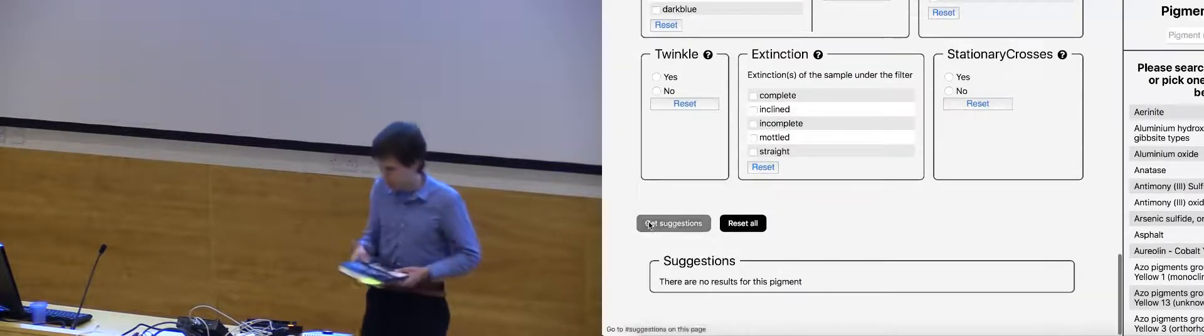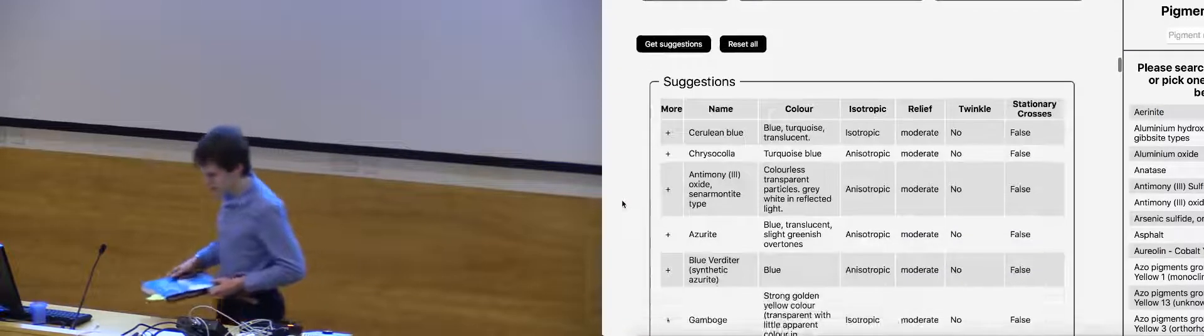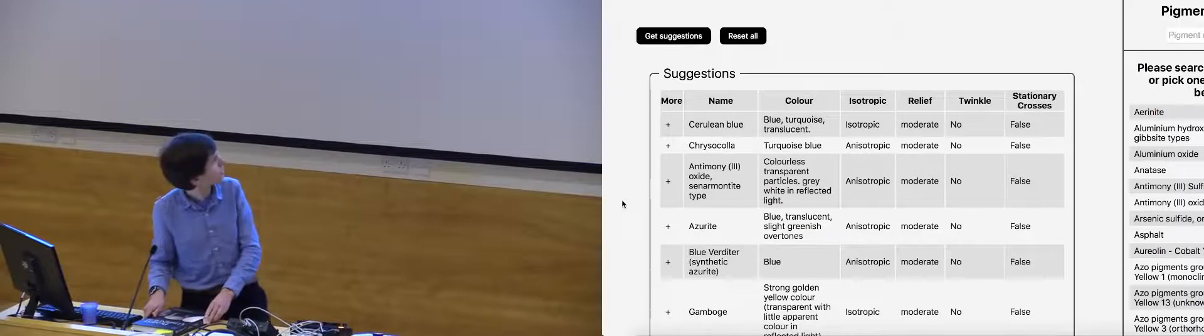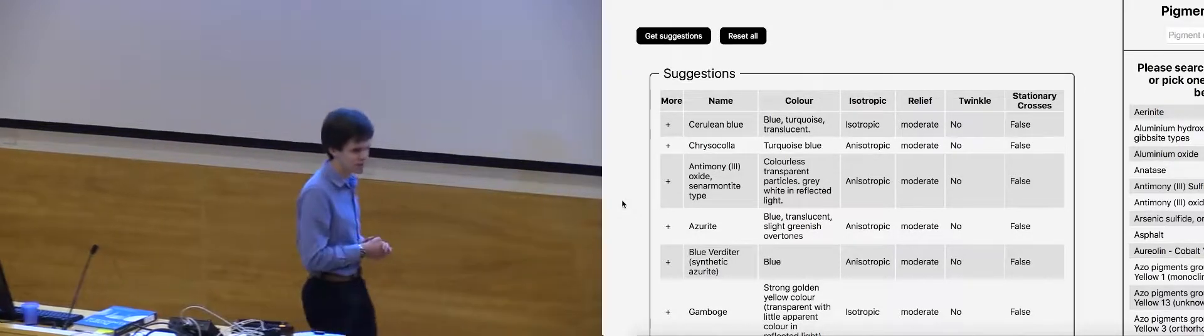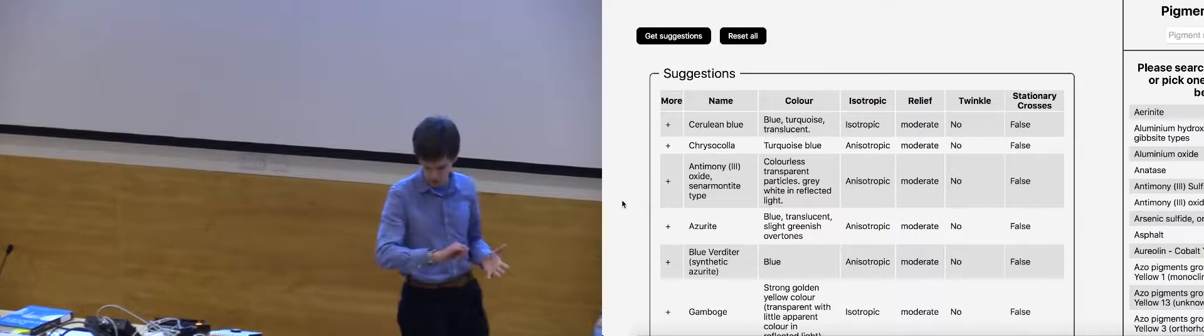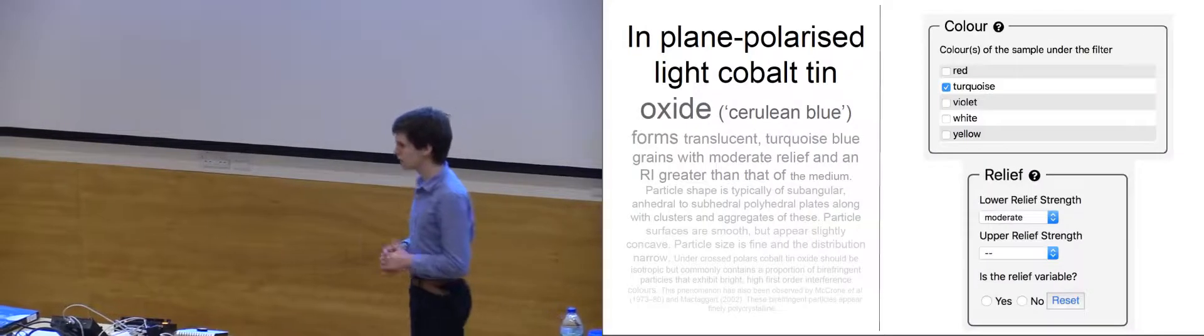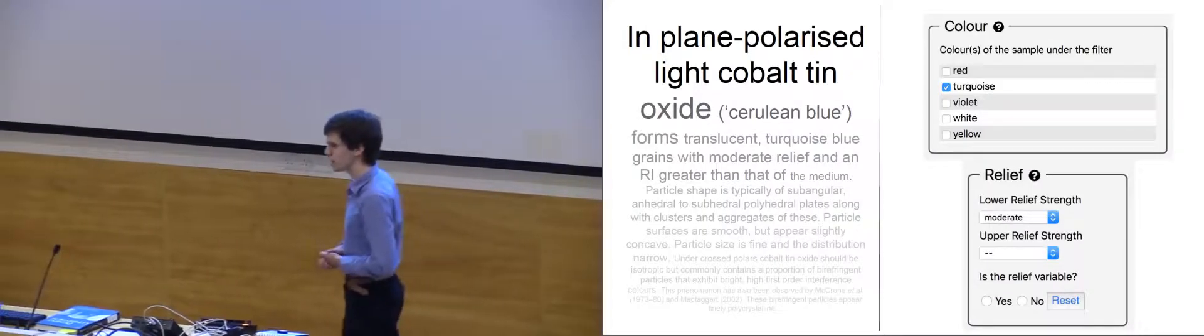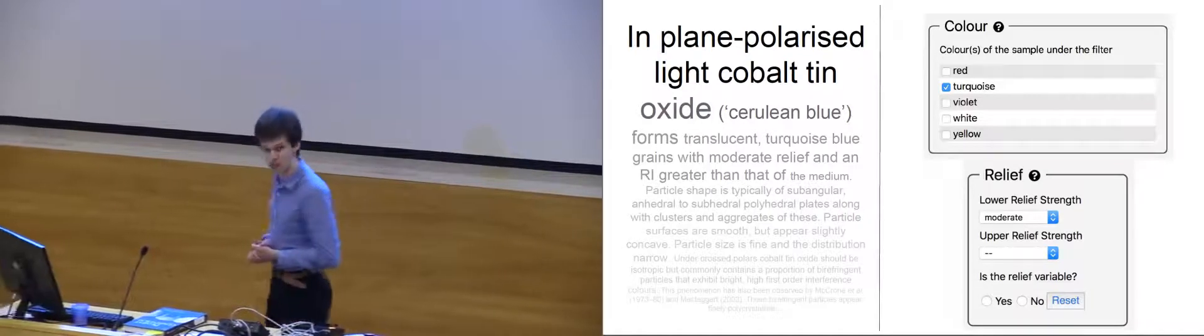Now, even with only these three characteristics entered, we can see that cerulean blue appears at the top of our suggestions list. And hopefully this gives you a kind of feel as to the kind of difference that our programme can make in the lives of someone practising PLM.